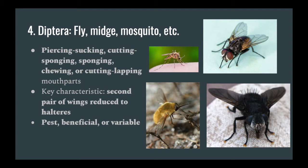Dipterans can also serve many ecological roles. Clearly mosquitoes are a large pest; however, other flies can also be very good pollinators.